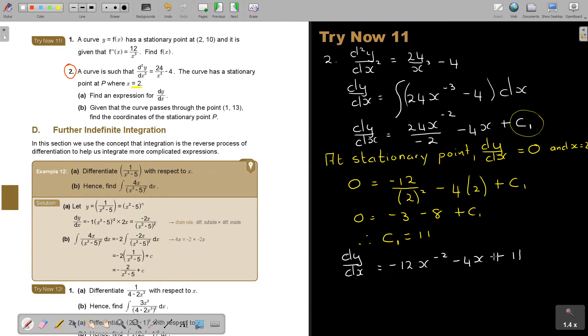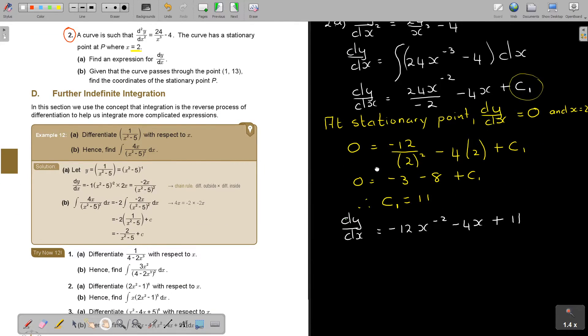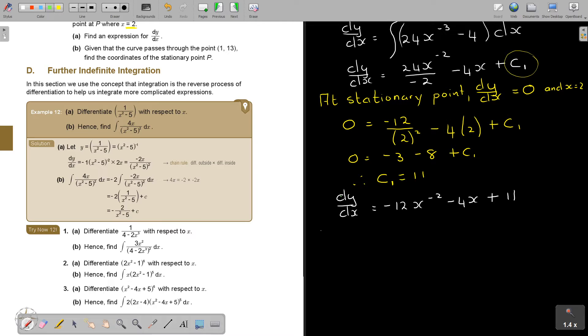That was actually part A. And now if we can move up a little bit to part B, given that the curve passes through the point 1 and 13, find the coordinates of the stationary point P.